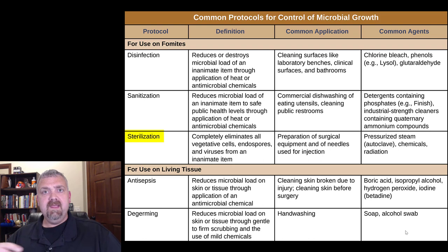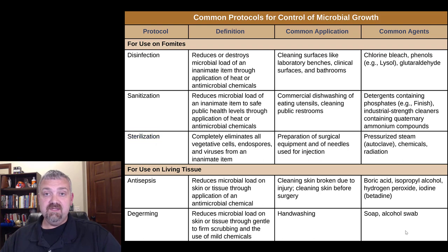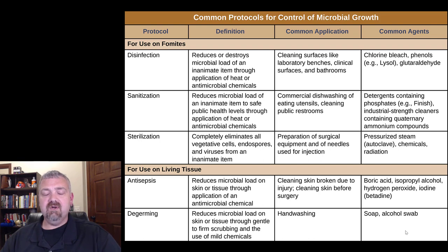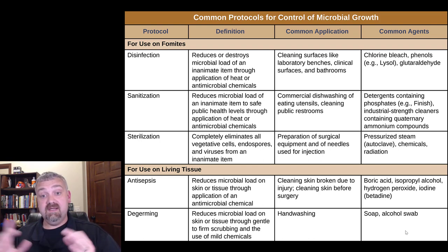Next we have sterilization. Aseptic technique, disinfectants, and antiseptics are all trying to reduce the number of microbes around. But if you can completely eliminate microbes, that's sterilization. In the micro lab, the autoclave and the Bunsen burner are really the only two things classified as sterilizing agents. Sterilization means killing everything — vegetative living cells, spores, and even infectious proteins like prions.